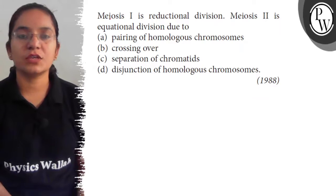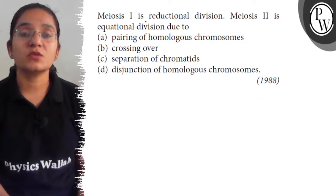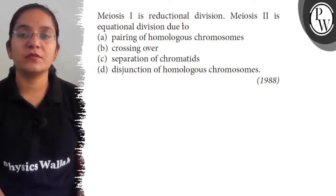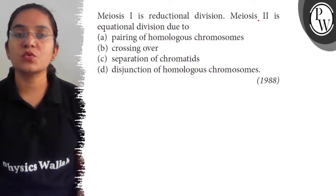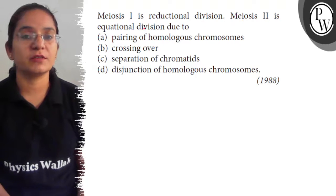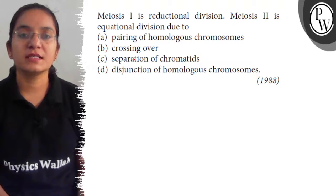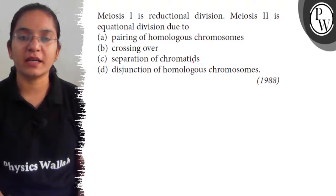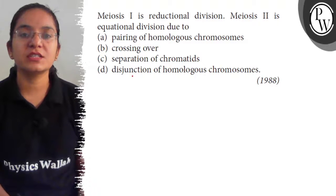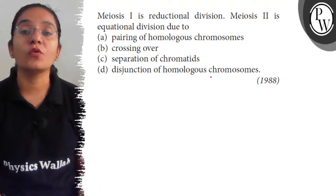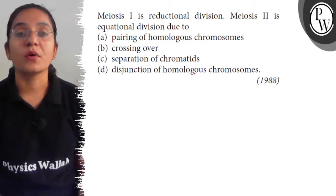Hello students, the question is: meiosis 1 is reductional division, meiosis 2 is equational division due to — a) pairing of homologous chromosome, b) crossing over, c) separation of chromatids, d) disjunction of homologous chromosome.